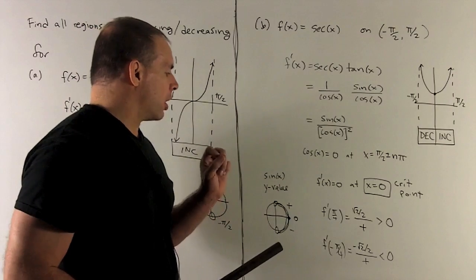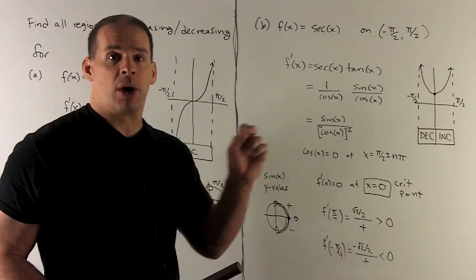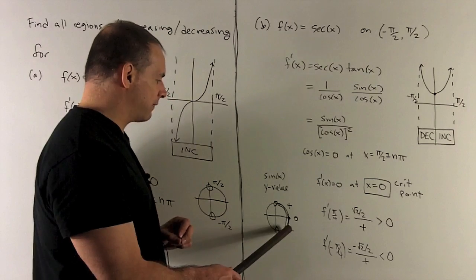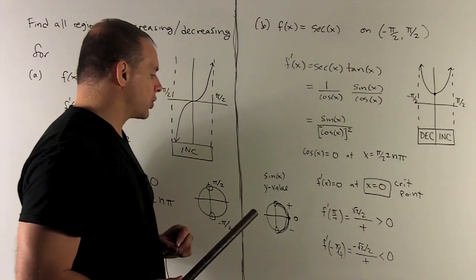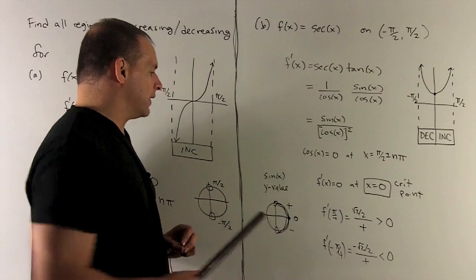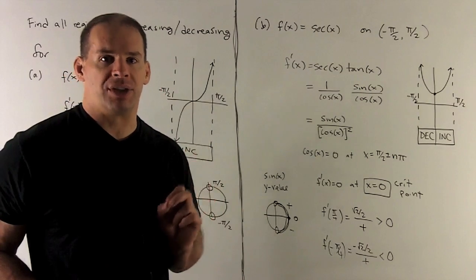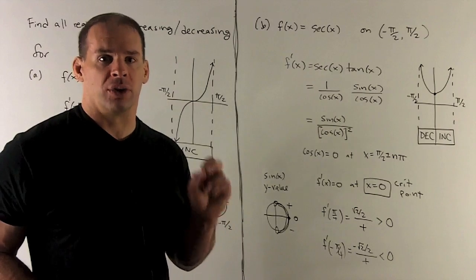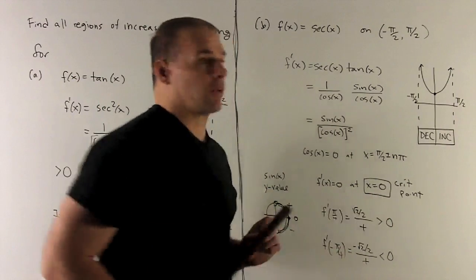If I look at our derivative at minus pi-fourths, we're going to get minus square root of 2 over 2 because minus pi-fourths is down here. Sine is going to be the y value in the unit circle. So y values are negative down here. So I get minus square root of 2 over 2. That's over a positive number. So here, our derivative is going to be negative. And I'm going to be decreasing in that region there.